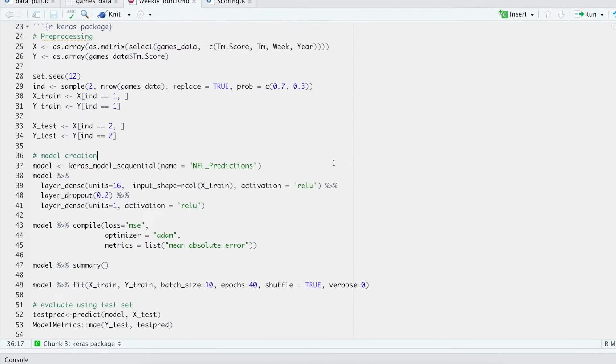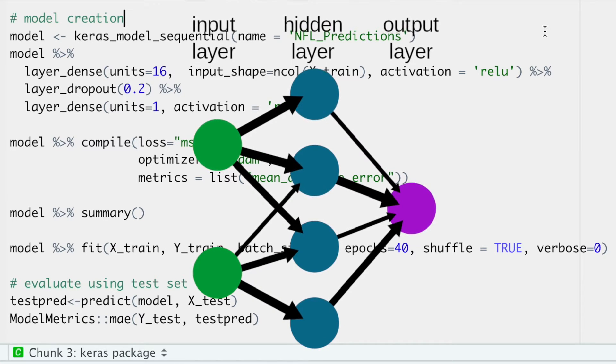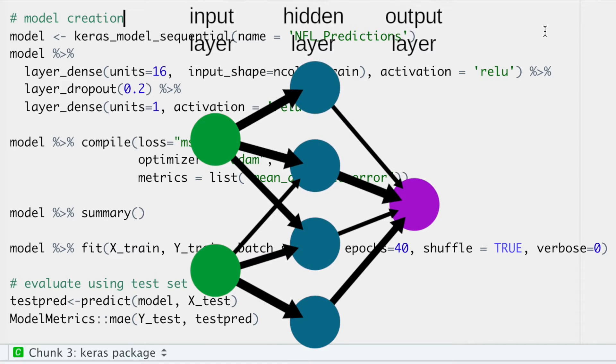Then we're going to get into building the model and this is the part that you can really have fun with. The performance of a neural network varies greatly with parameter tuning, so make sure to experiment with at least the number of layers, number of nodes in each layer, activation functions, and the optimizer that you use.